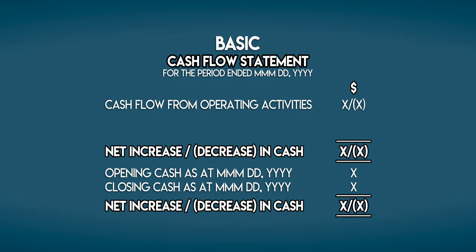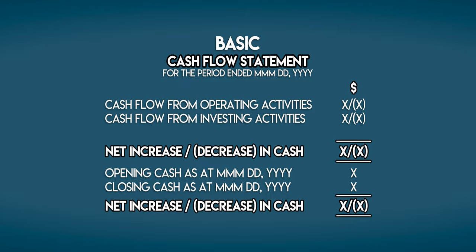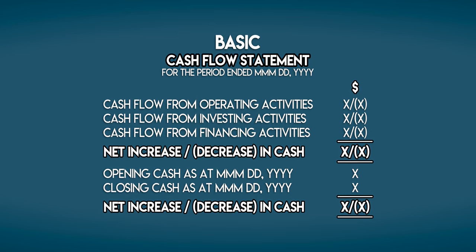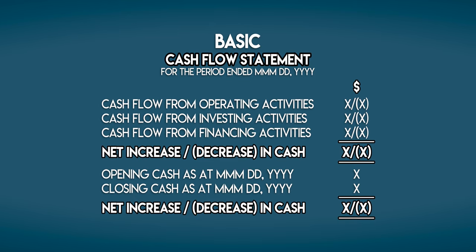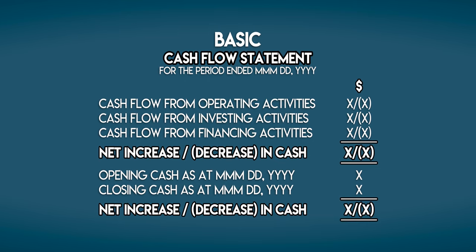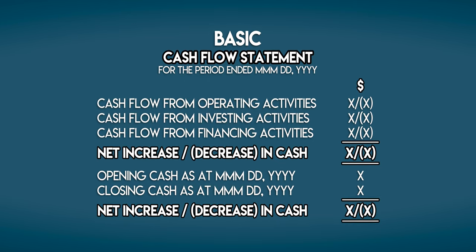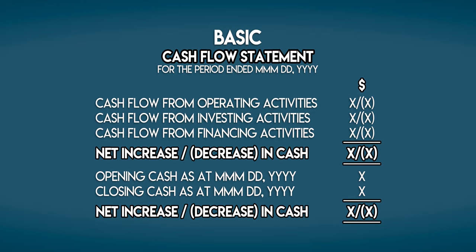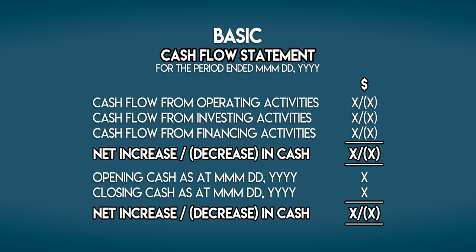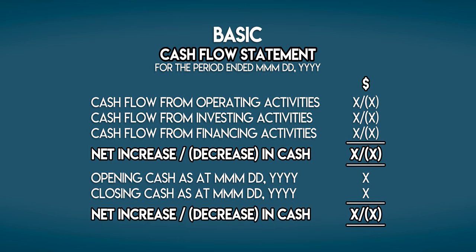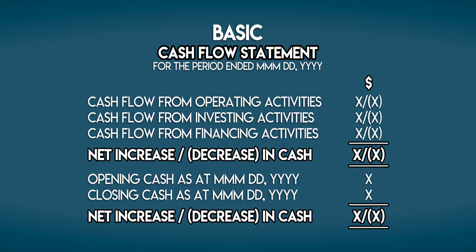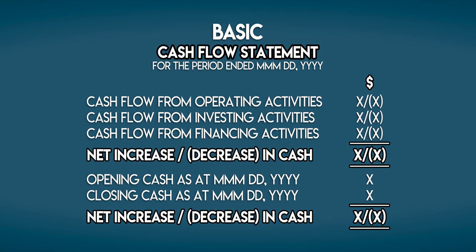There are three main sections: cash flow from operating activities, cash flow from investing activities, and cash flow from financing activities. Operating activities are the main revenue-generating activities of the business — these are the cash flows involved in selling goods or services. Investing activities sit outside of the business's core operations; they involve the buying or selling of investments or other long-term assets. And finally, financing activities relate to funding the business through raising or repaying cash to third-party banks or the owners of the business.